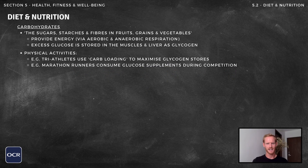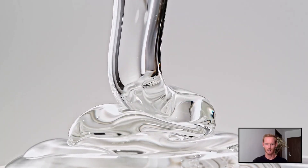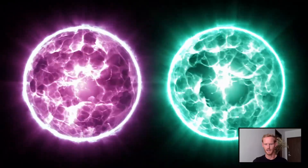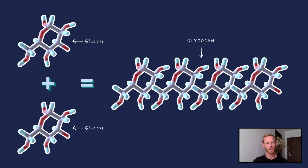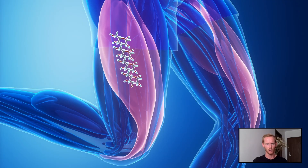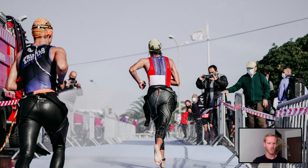Carbohydrates are the sugars, starches and fibres found in fruits, grains and vegetables. They typically make up a big portion of the diet and their main role is to provide the body with energy. They're broken down through digestion into simple sugars like fructose and glucose, which is converted into usable energy or ATP via aerobic and anaerobic respiration. Any excess glucose is converted into a molecule called glycogen and stored in the muscles and liver. If fuel becomes scarce or energy demands rise, this glycogen can be broken down into glucose and metabolized.